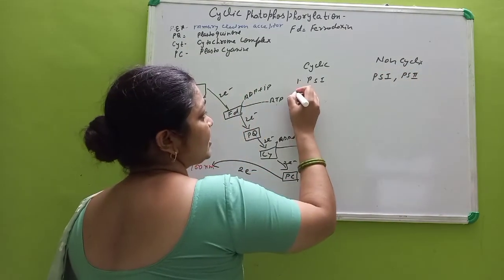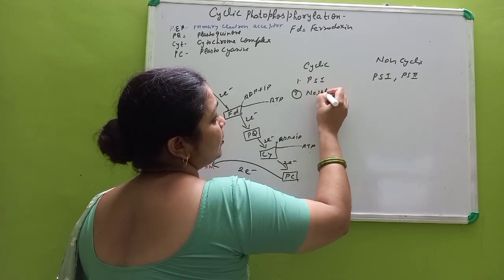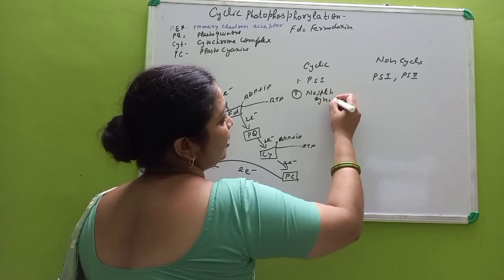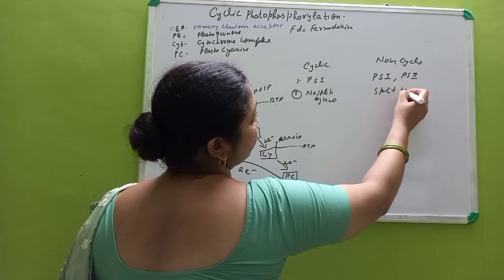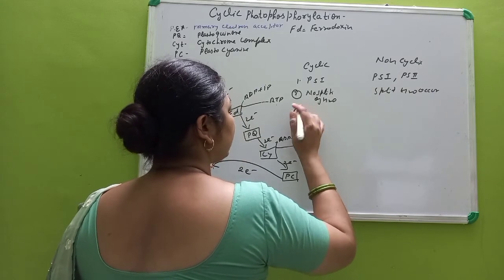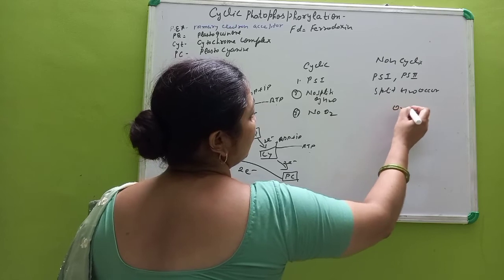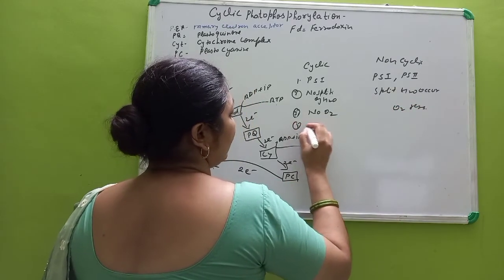In cyclic there is no splitting of water that takes place, whereas splitting of water takes place in non-cyclic. So no oxygen is released in cyclic, whereas oxygen is released in non-cyclic.